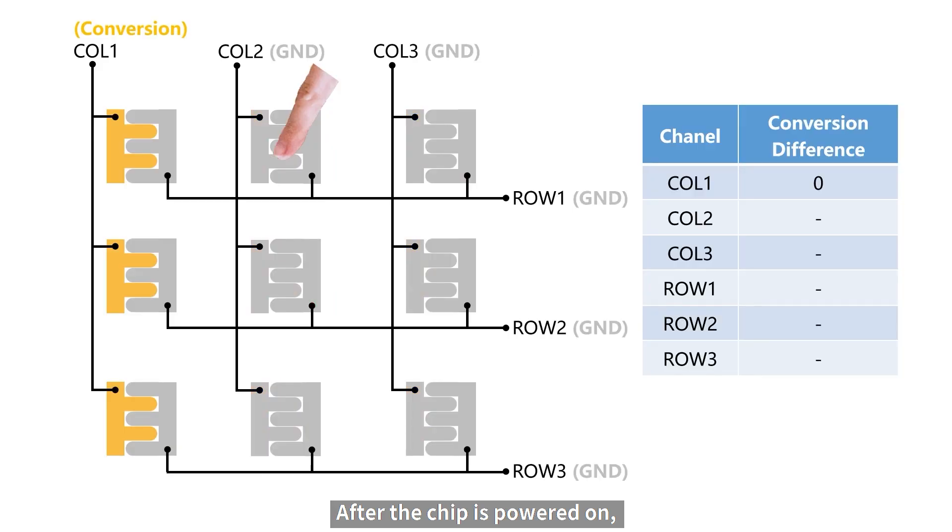After the chip is powered on, it will obtain the touch conversion value of each pad when it's not touched as a reference value. Even if it is touched at this time, there is no problem because this reference value will update after each scan, letting it gradually approach the correct reference value.